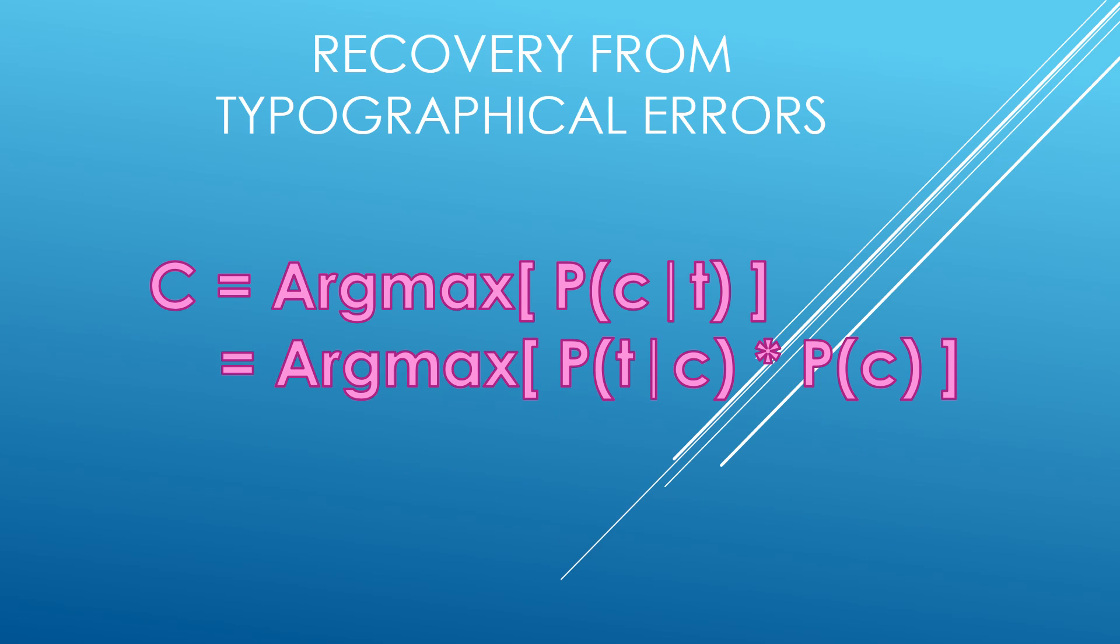Let us now see how we can recover from typographical errors. We need to find the probability of correct word given the typo in any given situation in order to correct the typographical error. Therefore, using Bayes' theorem, we can say that we need to find maximum of probability of T given C into probability of C, where C is correct word and T is the typographical word.